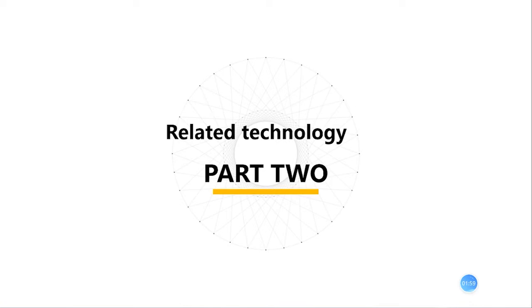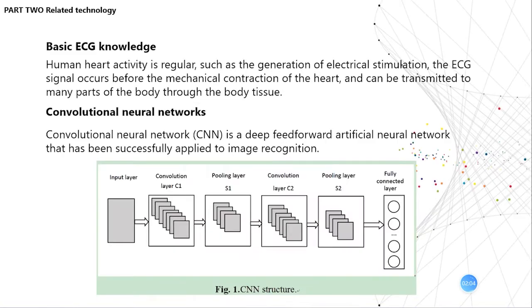The second part is related technology. First, basic ECG knowledge: human heart activity is regular, involving the generation of an electrical signal. The ECG signal occurs before the mechanical contraction of the heart and can be transmitted to many parts of the body through the body's tissue.